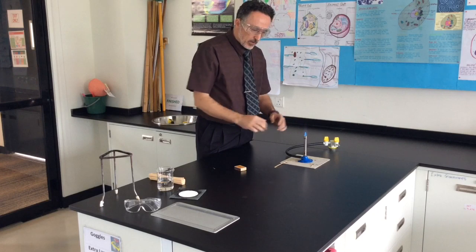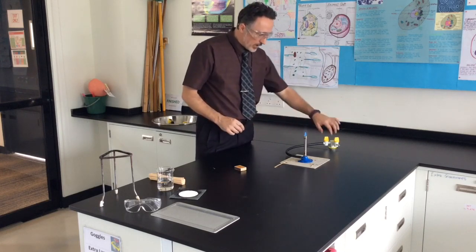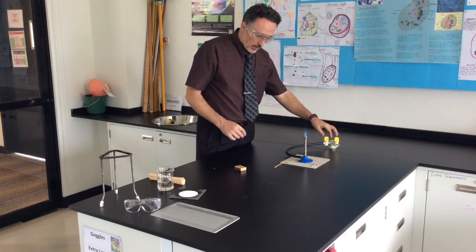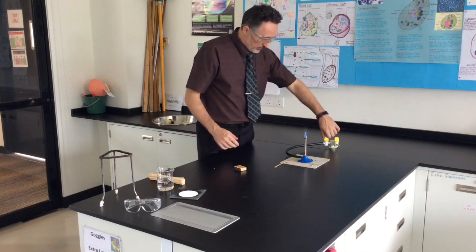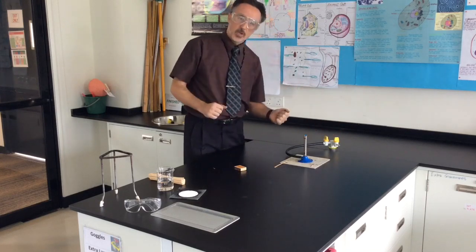If anything happens, like your Bunsen burner flame goes out, but you need to turn it off quickly, simply turn it off. So, let's do that. Off. Job done.